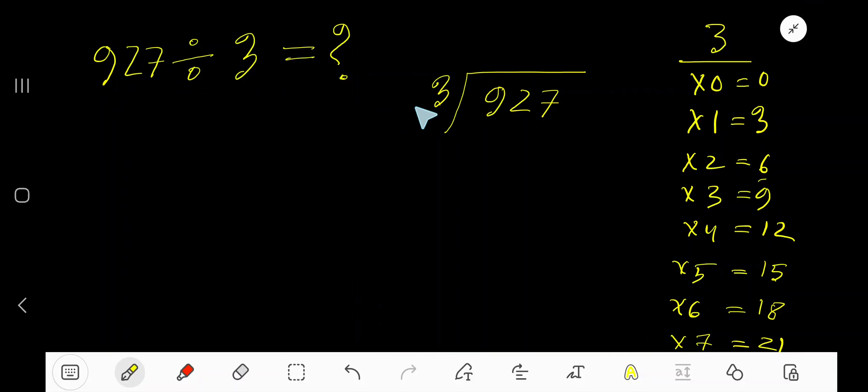927 divided by 3. Here 3 is the divisor, so we need the multiplication table of 3. 3 times 0 is 0, 3 times 1 is 3, 3 times 2 is 6, 3 times 3 is 9, 3 times 4 is 12, 3 times 5 is 15.